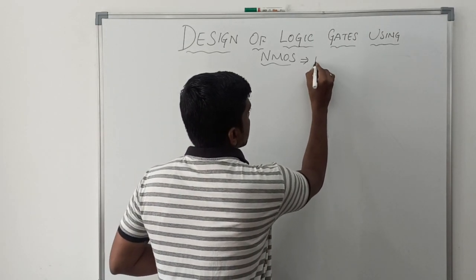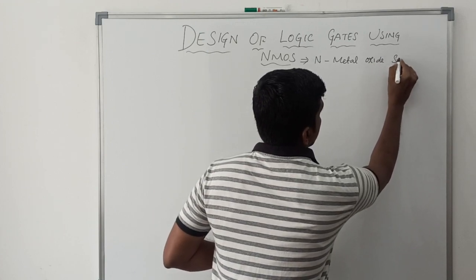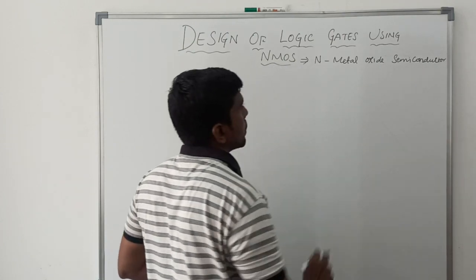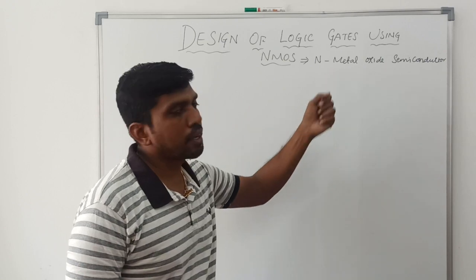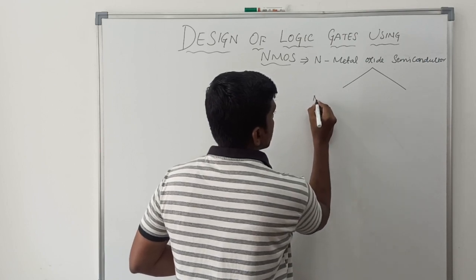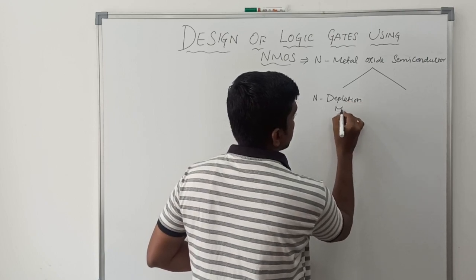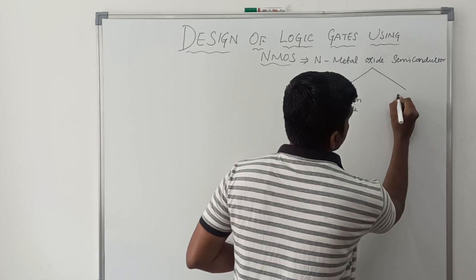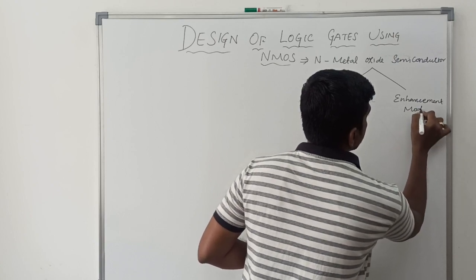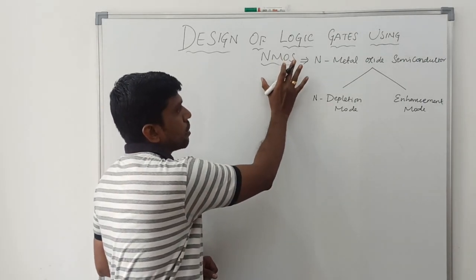NMOS means N-channel Metal Oxide Semiconductor. This NMOS operates in two modes of operation. The first mode is depletion mode, and the second mode of operation is enhancement mode. These are the two operating modes of the NMOS transistor.